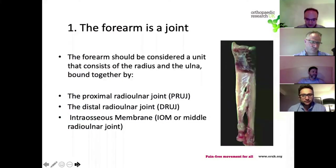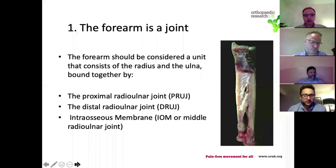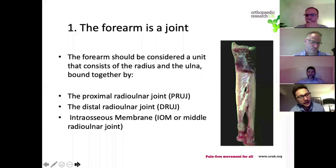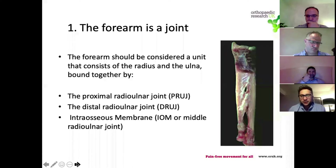The talk is going to cover roughly ten points. Point number one, which is arguably the most important, is that we have to start considering the forearm as a joint. Most people just think it's a gap between the wrist and the elbow, but actually it really is a unit and should be considered as a joint. When you do consider it as a joint, you can understand the pathology and the treatment a great deal better. There's the proximal and distal radial joints, which we're familiar with, but the bit in the middle - which we'll focus on - is the intraosseous membrane.